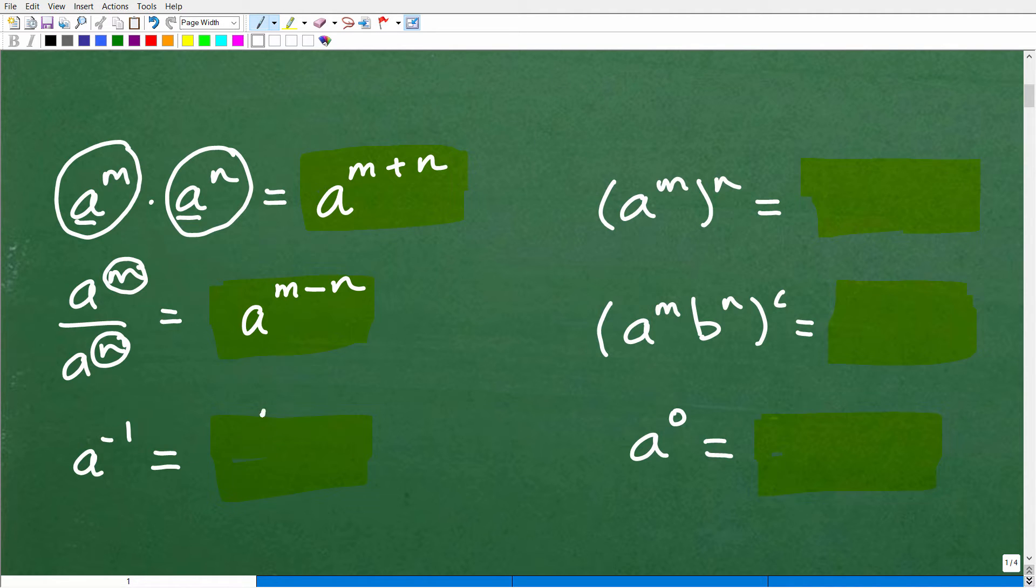a to the negative n is 1 over a to the n. That's the way we want to write that. I have whole videos on negative exponents. This is something that students typically get confused. This is the actual general rule right there.